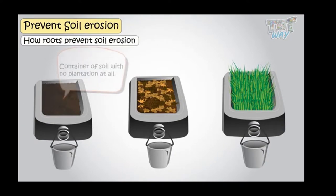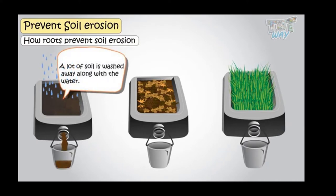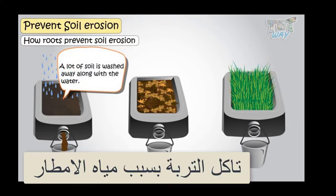Here we have a container of soil with no plantation at all. And if water is drained from over this soil, a lot of soil is then washed away along with the water.